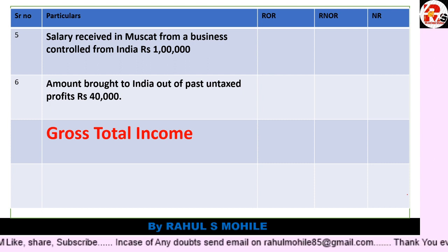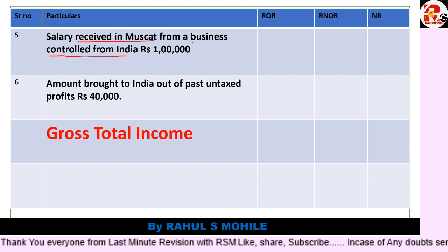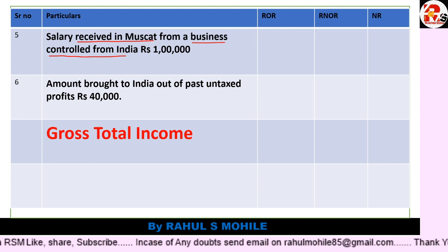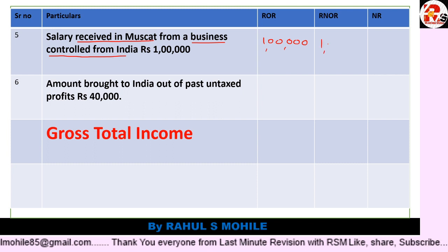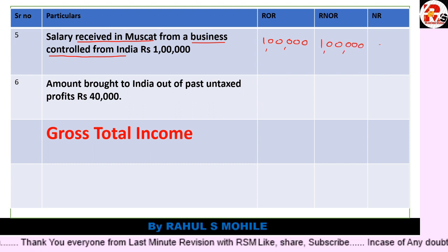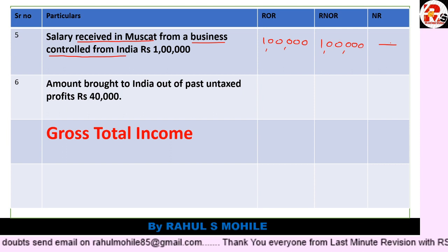Next point: salary received in Muscat from a business controlled from India. Muscat is a foreign country, but the business is controlled from India — very important point. As I explained, if it is foreign income but the business is controlled from India, write it in the first two categories: ROR and RNOR. So ₹1 lakh goes in ROR and RNOR, and dash in NR. India-related income goes in all three; foreign income controlled from India goes in two.